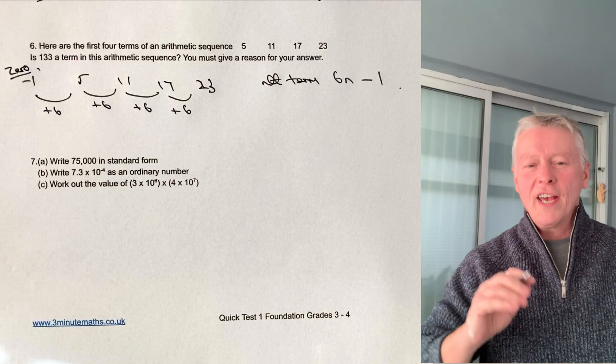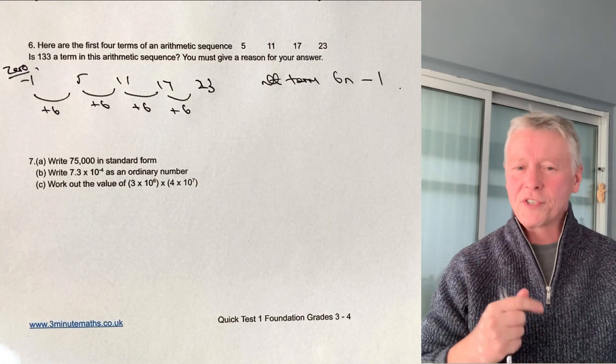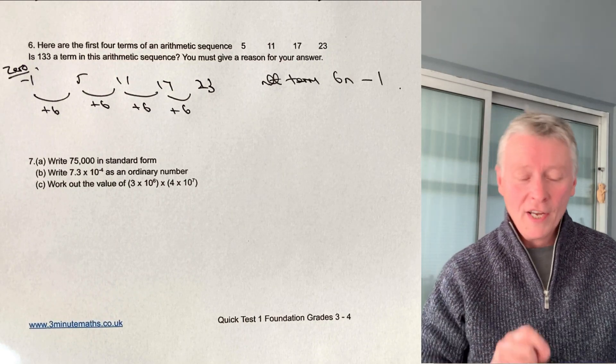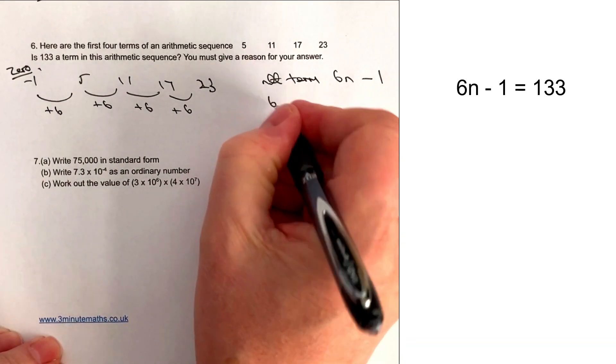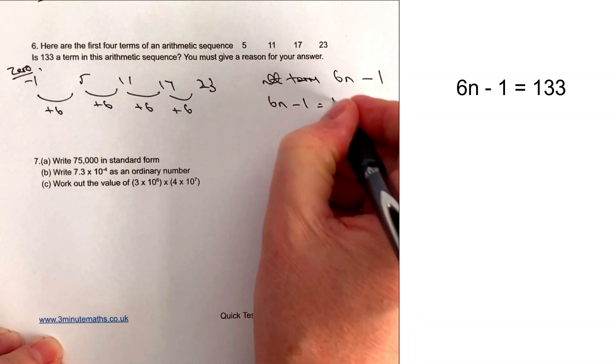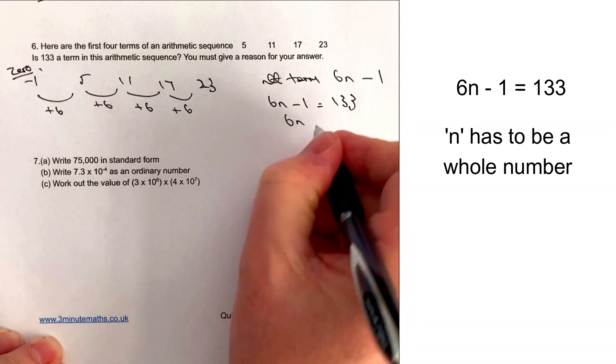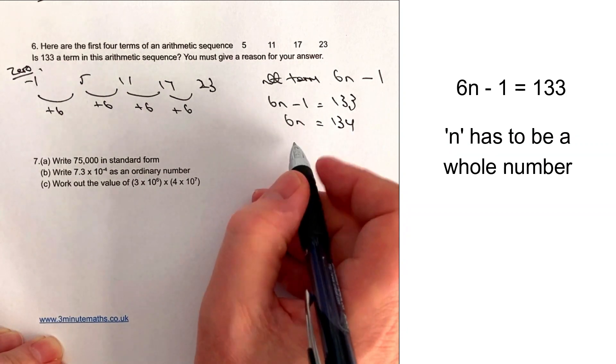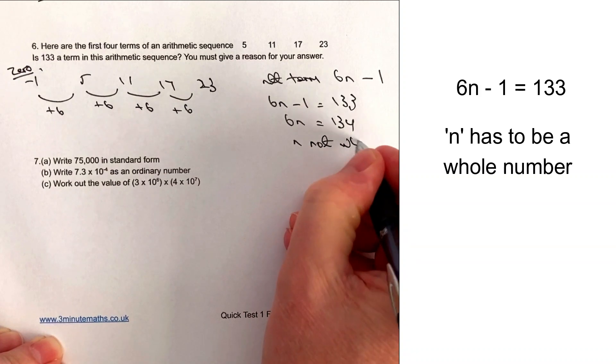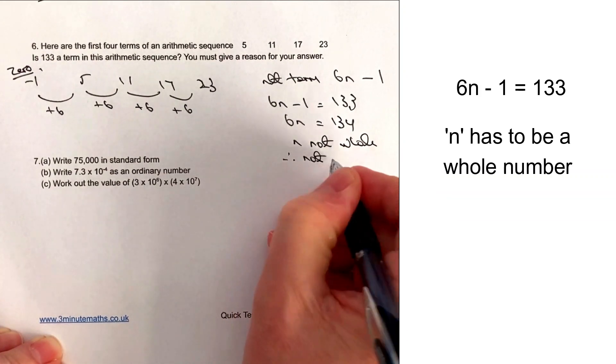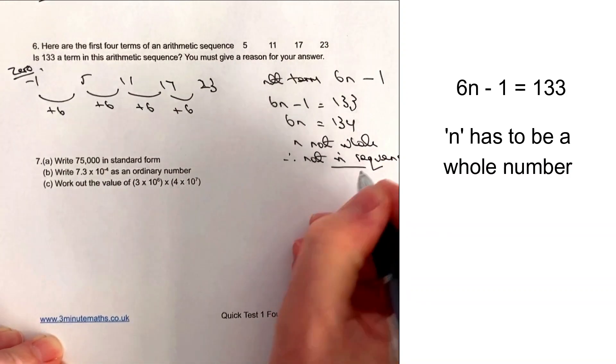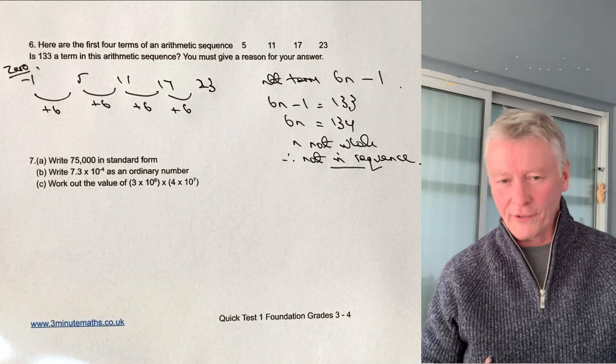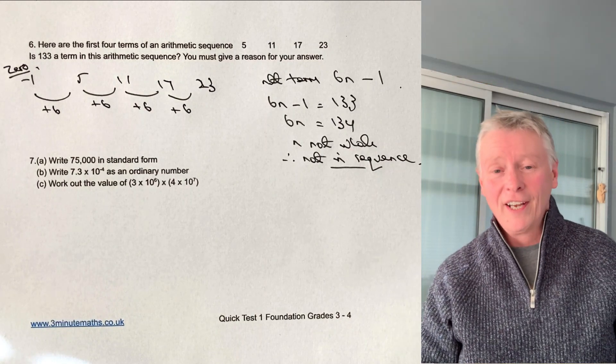Now then the question says, is that particular number a term in the sequence? In other words, does it have a place? Well, the only way it's going to have a place is if that value of n is a whole number. So in other words, we can feed it directly into the equation and we can say 6n minus one must equal 133. Now, if I add one to both sides, I've got 6n equals 134. But if I divide 134 by six, n is not whole. So therefore not in sequence. Now, if you're not entirely sure what I'm talking about there, please do have a look at the post on three-minute maths and that will give you a bit more detail.